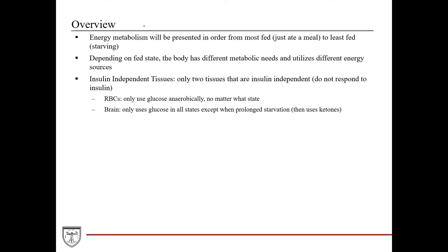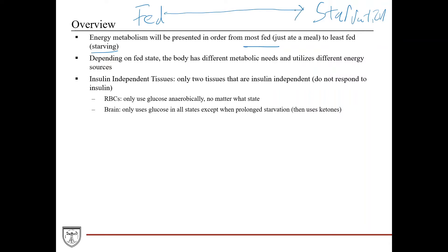In this lecture, energy metabolism will be presented in the order of most fed — just after you ate a meal — to the least fed, meaning starvation. We'll walk through how, depending on the state you're in, the different metabolic needs require that you use different energy sources, whether you're in an early fasting stage or moving toward starvation, which metabolites and energy sources are used depends on where you are on this spectrum.